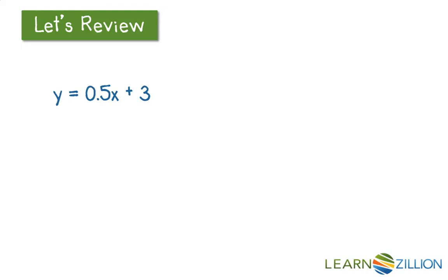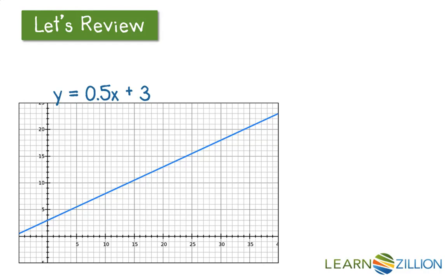Let's see how this works in a graph. If we have this equation here, y equals 0.5x plus 3, and we graph that, then we have this line right here.